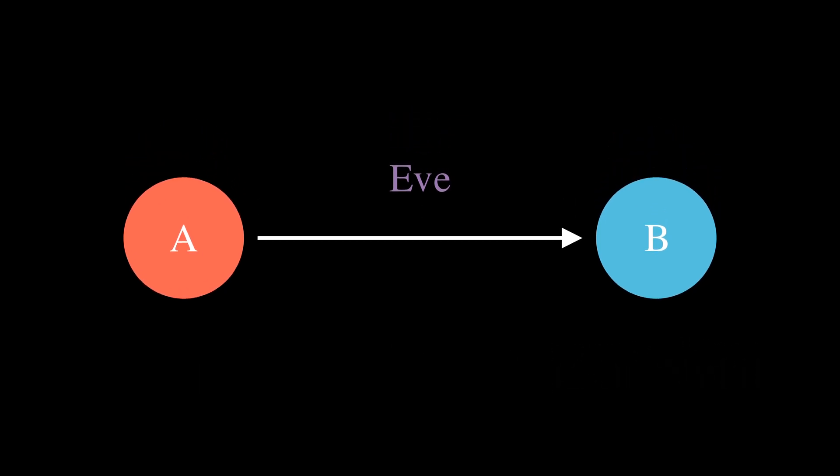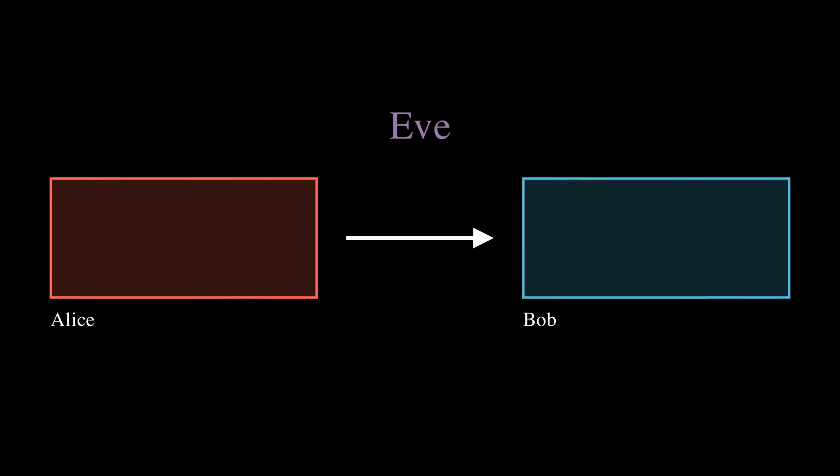Let's define the basic process. Alice starts with her normal message called plaintext, then passes through some function encrypt. This output is what we call ciphertext and is sent to Bob. Bob then uses some function decrypt ciphertext, which converts it back into the original message.